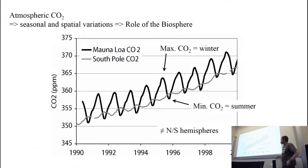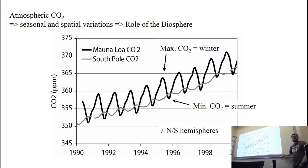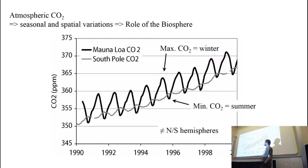Some areas of the terrestrial biosphere — rainforests — have a longer residence time, so it takes a lot longer for carbon to cycle through rainforest than through maybe grassland. But the key message is that because the fluxes are large and the stocks are relatively small, we can change the concentration or amount of carbon in each of those reservoirs very, very easily. And we can see that in the atmospheric records.